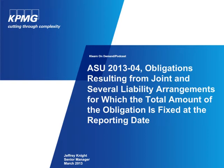In order to improve the comparability of financial statements and reduce the diversity in practice, the EITF staff worked over the last couple years to develop guidance in this area. In January of 2013, the EITF reached a final consensus, and in February of 2013, Accounting Standard Update 2013-04 was issued to clarify the accounting for obligations resulting from joint and several liability arrangements where the total amount of the obligation is fixed at the reporting date.